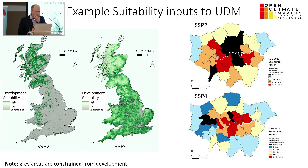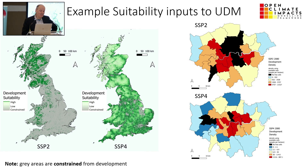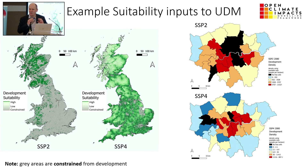Comparing SSP2 and SSP4: SSP2 is a very constrained future where there are many places you cannot build. It's hard to see areas in England where you can build, except in one or two cases at this scale — though if you zoom in there are some small areas. SSP4 is much more open and free.